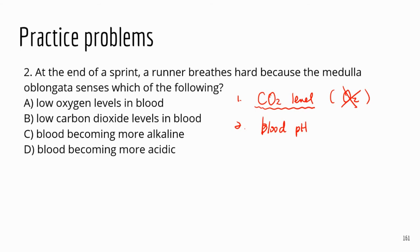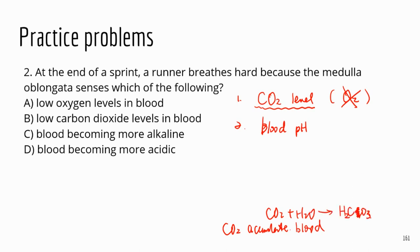Blood pH is also monitored as an indication of too much carbon dioxide. When you don't breathe, you don't get oxygen in and you don't get rid of carbon dioxide, so CO2 accumulates in the blood. Carbon dioxide reacts with water to generate carbonic acid, which can dissociate in water and release hydrogen ions — so that's going to decrease your blood pH.